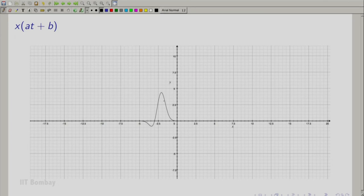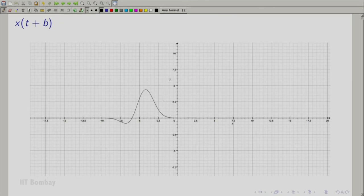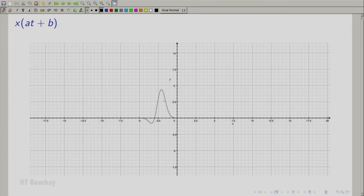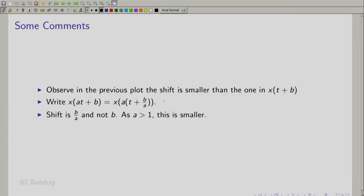But, if you notice carefully, the shift in this case is not as much as the shift you observed in just the plot of x(t + b). I will show that graph again. So, this is x(t + b) and this is graph of x(at + b). The shift here is noticeably less. So, how we explain that, we show in the next slide. So, again, we observe that in the previous plot, the shift is smaller than the one in the plot for x(t + b).